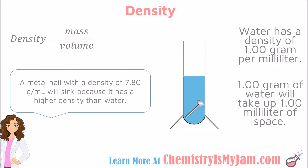If something has a density that is lower than that — maybe gasoline, for example — it will float on top of the water. So density helps us to determine whether or not something will sink or float. Density is also useful for helping us to identify substances. If you measure the density of this nail, you could then go to a table of data and use that density to help determine what metal the nail was made of.